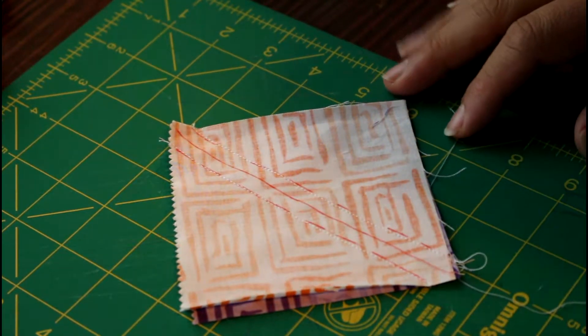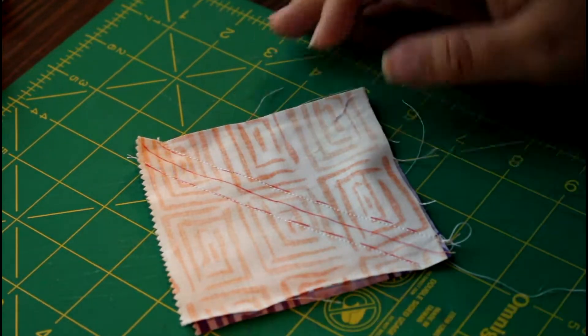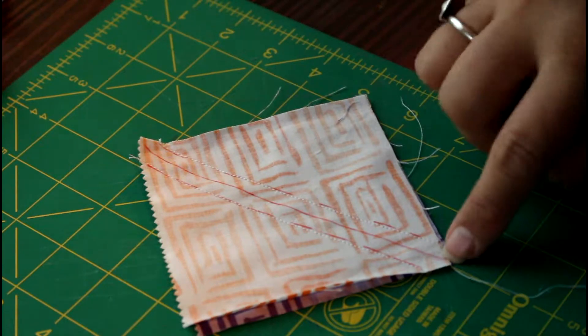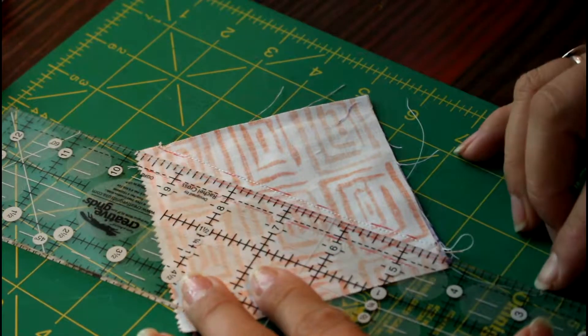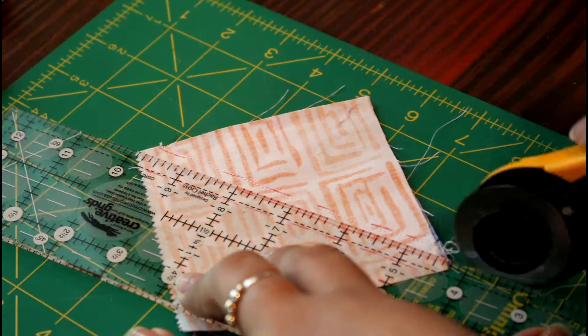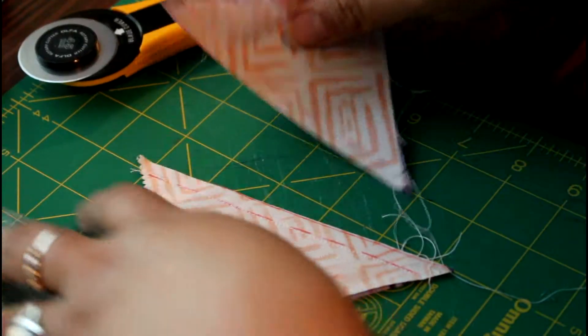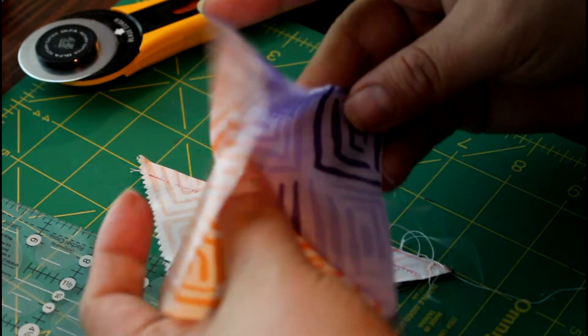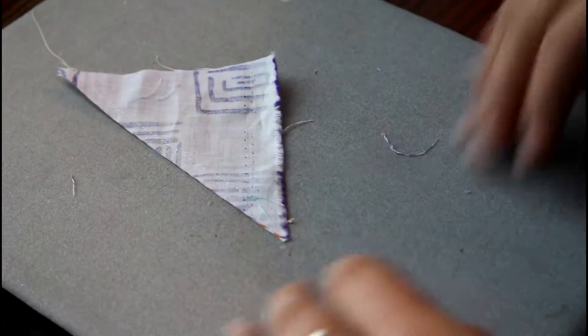So now that you have your piece sewn, what you do is go ahead and cut your center line from corner to corner. And so here is your half square triangle.